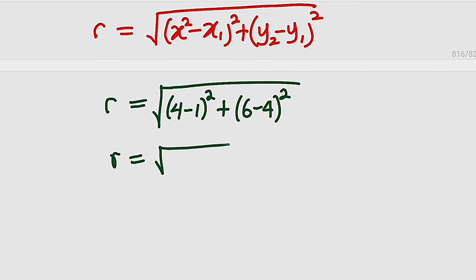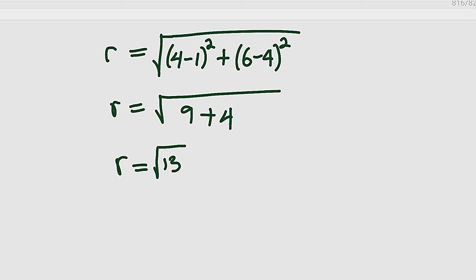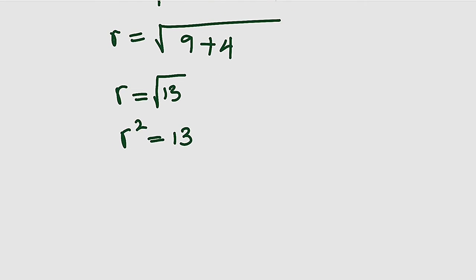Radius will be 4-1 here is 3, and 3² is 9. 6-4 is 2, and 2² is 4. And hence, r will equal √(9+4) which equals √13. But remember that equation of a circle in standard form has r². So we can square both sides. r² is now equal to 13.